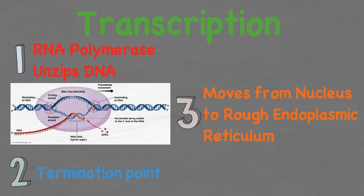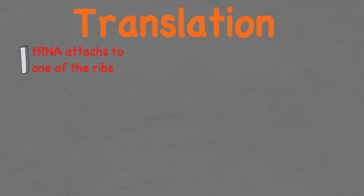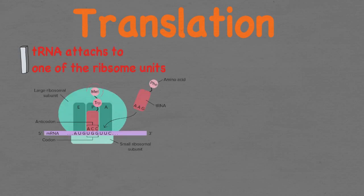Translation is the next part of protein synthesis. Initiation begins with tRNA attaching to one of the ribosome units. MET protein is the universal start code for reading the mRNA strand. The larger ribosome subunit now binds to the smaller unit, forming a complex as you can see in the picture. The tRNA binds to the mRNA where the code for MET is located, and translation can now begin. MET is represented on the mRNA strand as AUG.